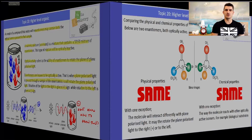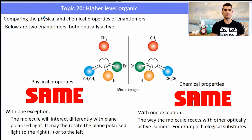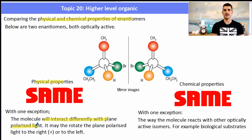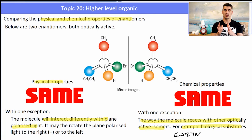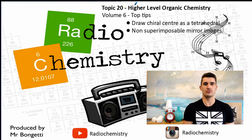Sometimes we're asked to compare the physical and chemical properties of enantiomers. These two optical isomers are both optically active. Their physical properties are the same, with one exception: the way they interact with plane-polarized light. Their chemical properties are also the same, with one exception: the way they interact with biological molecules. Enzymes are very selective in the substrates they interact with, so optical isomers may have different interactions with enzymes because of their different optical shape. Top tip for volume 6: draw the chiral center as a tetrahedral and remember that enantiomers are non-superimposable mirror images.